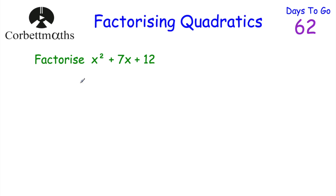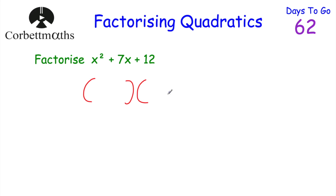So here's our first question — it says to factorise x squared plus 7x plus 12. It's very important we can factorise quadratics, and if you think back to our expanding two brackets video, we looked at expanding two brackets. Whenever you expand two brackets you get things in this quadratic form. So whenever you've been asked to factorise a quadratic you want to put it back into brackets. Because the x squared term means we'll have an x at the front of both brackets, since x times x is x squared.